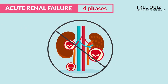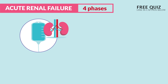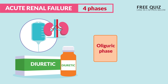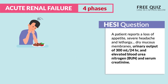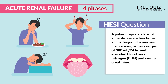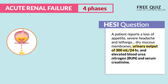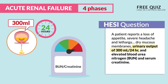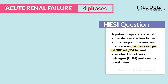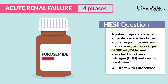The main treatment goal is to prevent major kidney damage by flushing the kidneys with a fluid bolus or diuretics — pushing the kidneys from the oliguric phase into the diuresis phase. A HESI scenario describes a patient with loss of appetite, severe headache, lethargy, dry mucous membranes, urinary output of 300 mL in 24 hours, and elevated BUN and serum creatinine — the answer is to treat with furosemide. Furosemide is a diuretic that pushes the kidneys into the diuresis phase — it ends in '-ide,' so the body is dried from diuresing all that fluid.